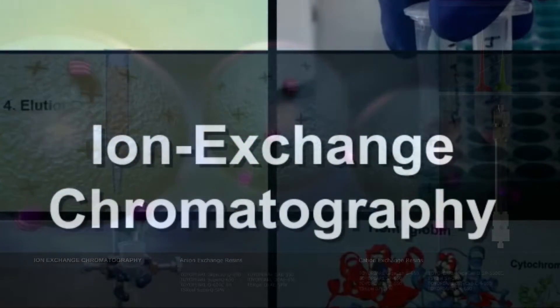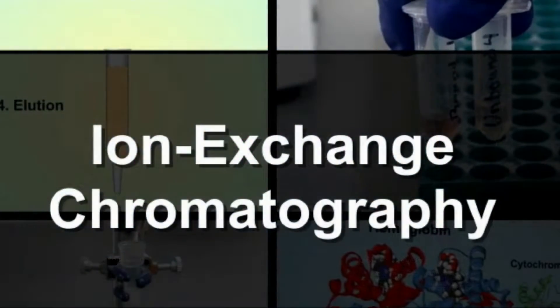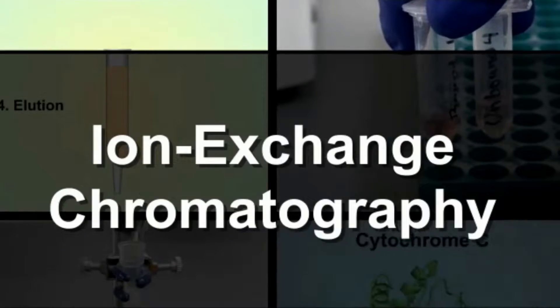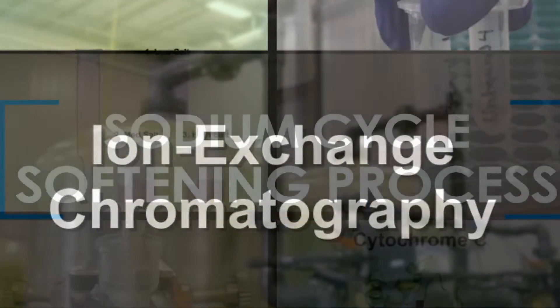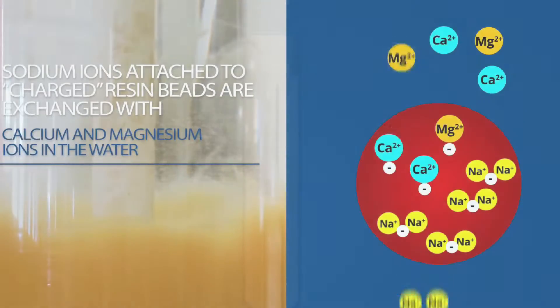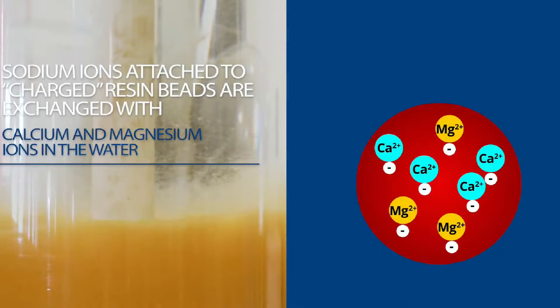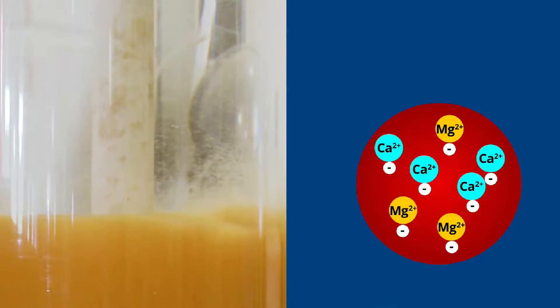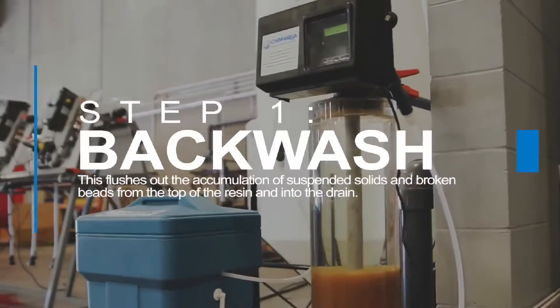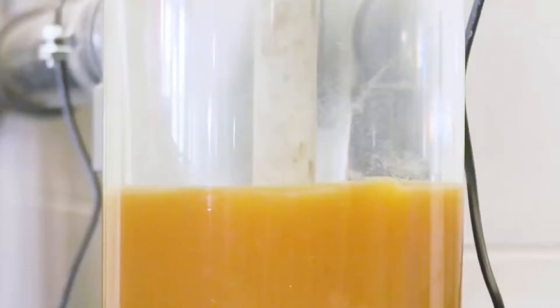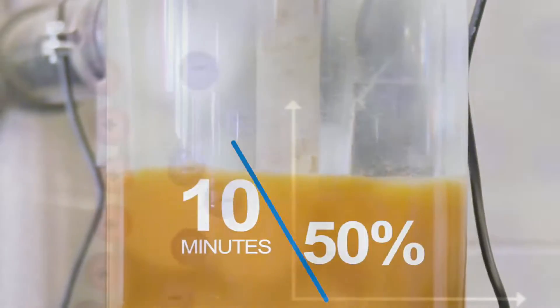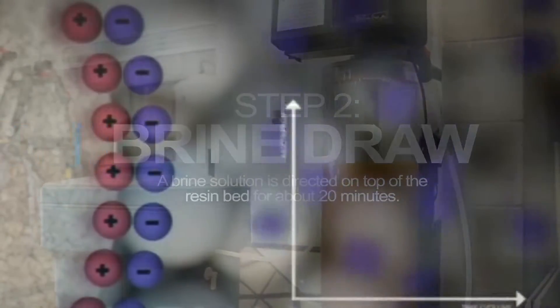When the resin loses its ion exchange capacity or is depleted, a regeneration is carried out by passing a regenerating solution through it with the original ion that corresponds to it. This ion binds to the radicals on the resin and displaces the trapped ions during normal operation.